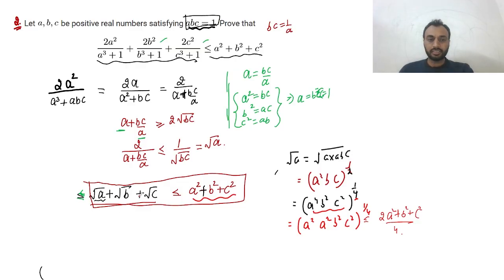Similarly, the same thing we can do for √b and √c. Finally when we add them we will get 4 times a, 4 times b, 4 times c by 4 which is 4a², 4b², 4c². We get a² + b² + c², right.